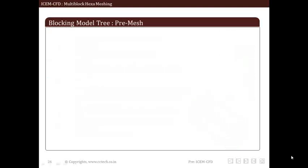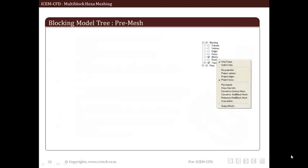Under the blocking option, we also have the pre-mesh tab. This allows us to play with visibility of mesh generated. By right clicking on pre-mesh tab, we get different options such as wireframe, solid, recompute, show size information, convert to unstructured mesh, convert to multi-block mesh, no projection, project vertices, project edges, project faces, etc.